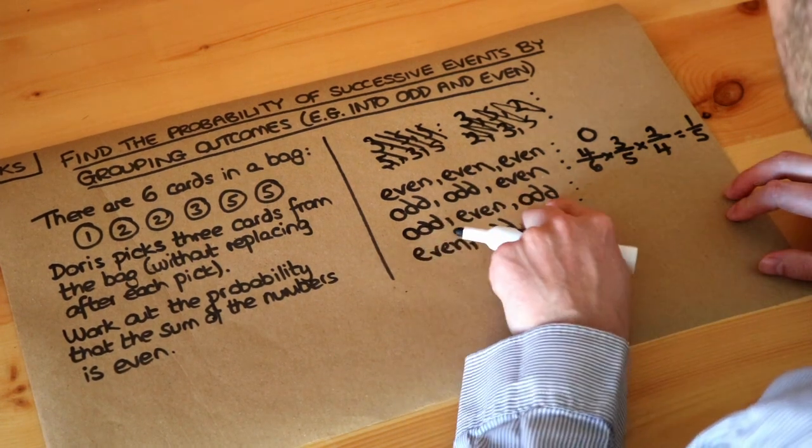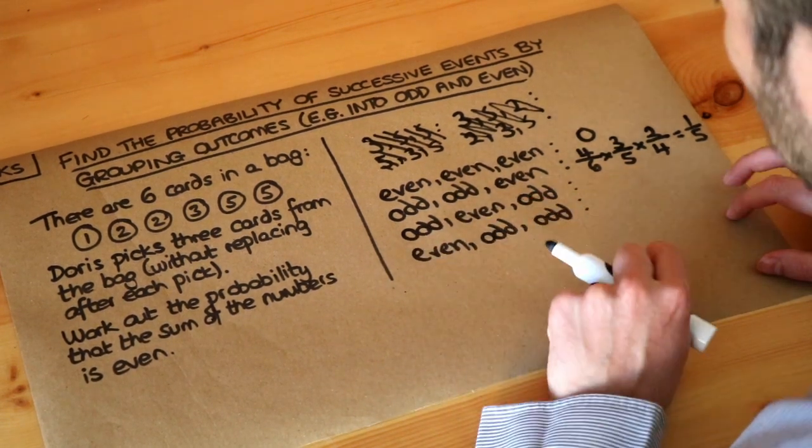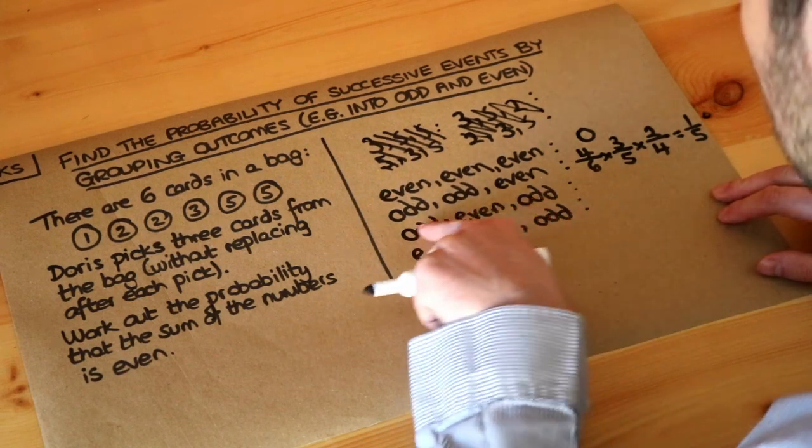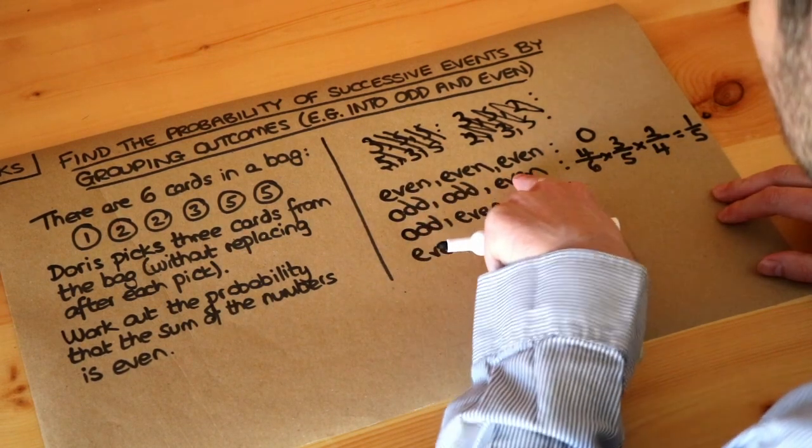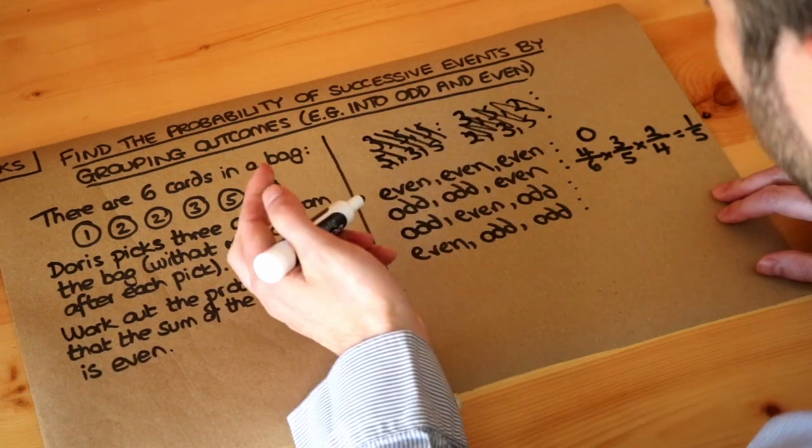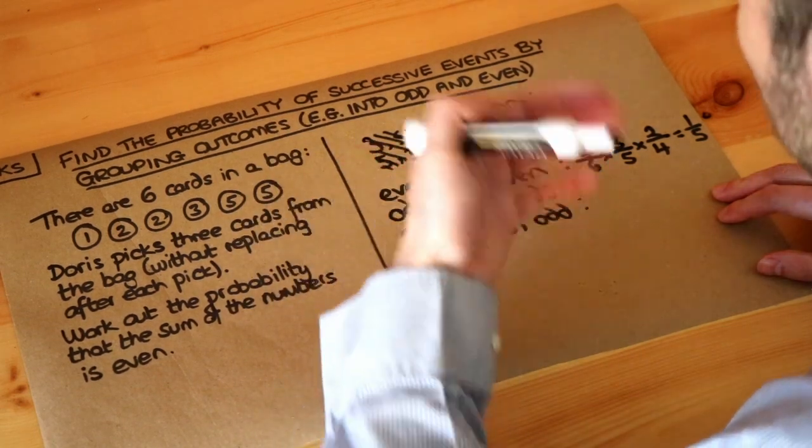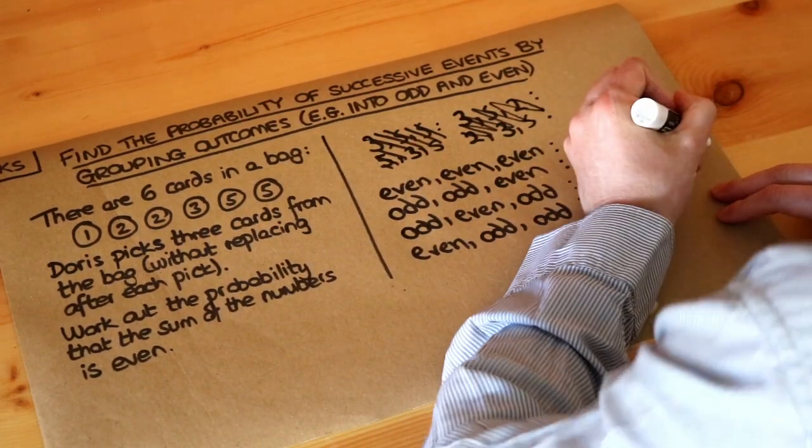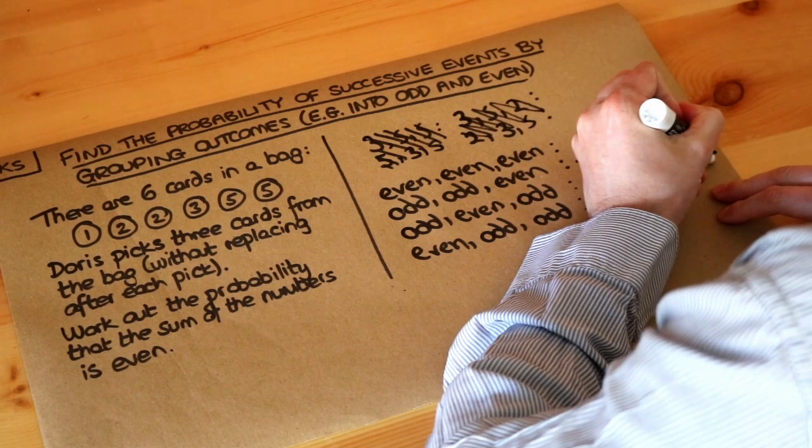Now, odd, even, odd. Remember what I said before, if you've got the same things as before, you've got two odds and an even, two odds and an even, but then a different order, and you're sampling without replacement, you will end up with the same probability. So this will be a fifth again.